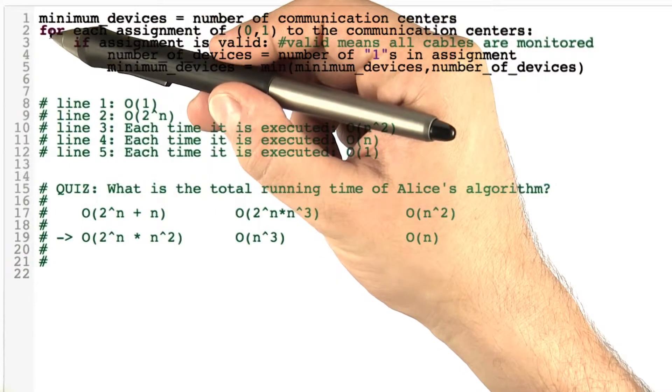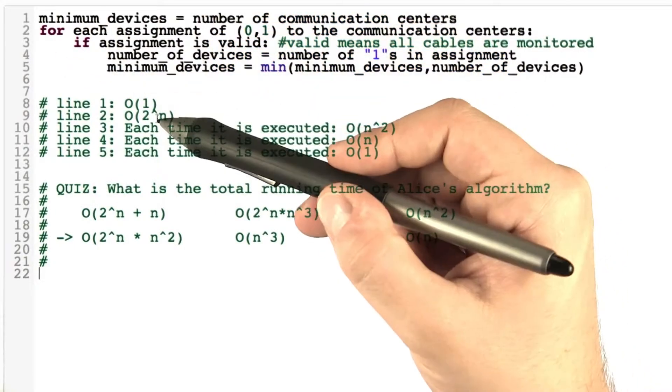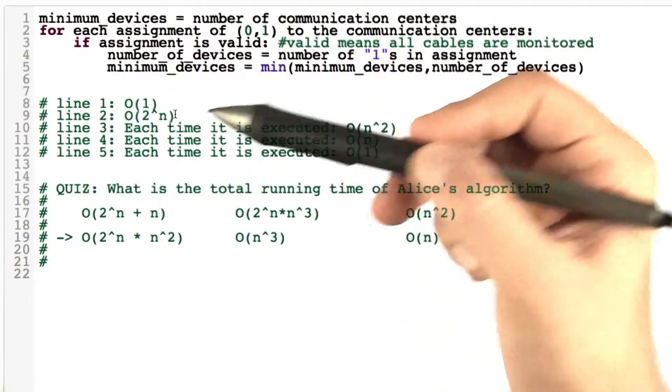So the first line here takes constant amount of time, so that's not going to be relevant. Now, this loop here, lines 2 to 5, are executed 2 to the power of n times.